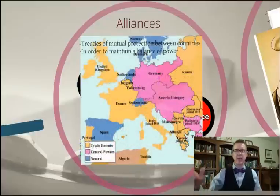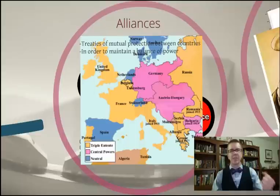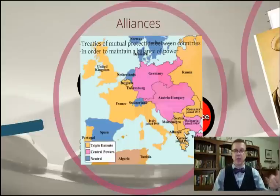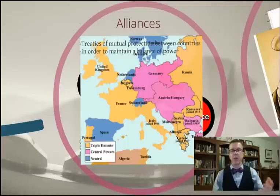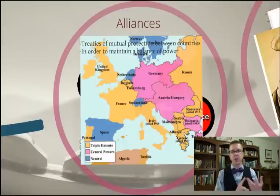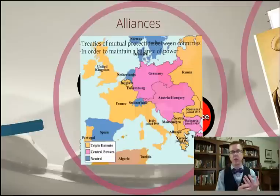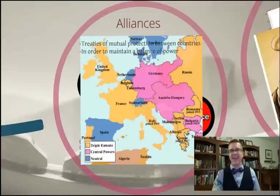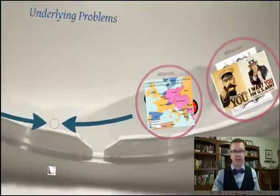The Triple Entente is now referred to as the Allies because it's not just the United Kingdom, France, and Russia — it also includes Italy. Romania, Serbia, Montenegro, and Greece join as well. The Central Powers are no longer the Triple Alliance; it's Germany, Austria-Hungary, and Bulgaria, and the Ottoman Empire, or Turkey, joins them. In fact, that will be one place in the war where the British will be handed a resounding defeat.